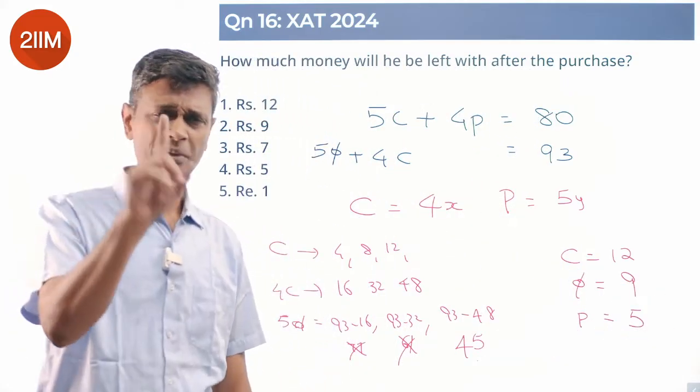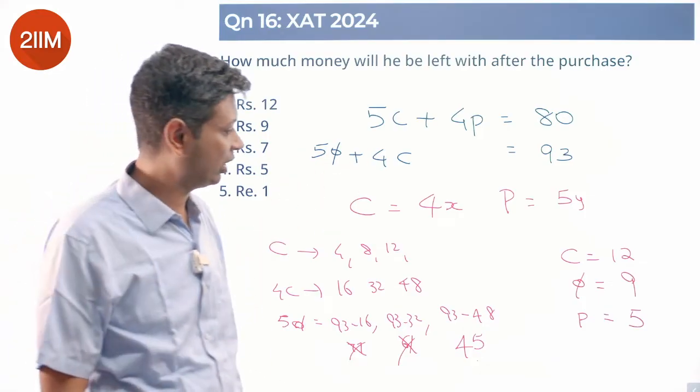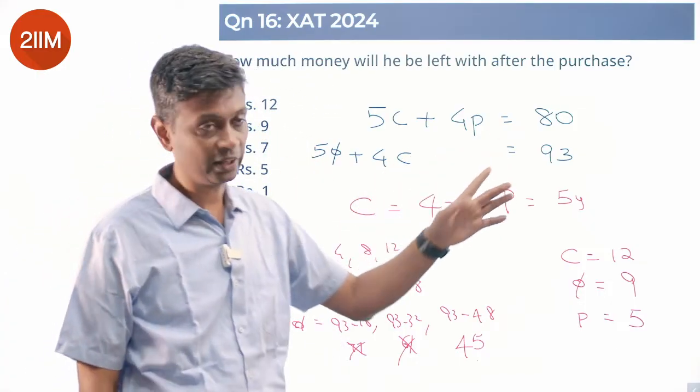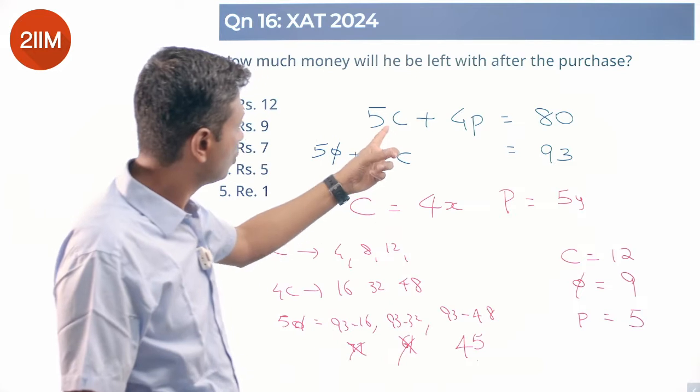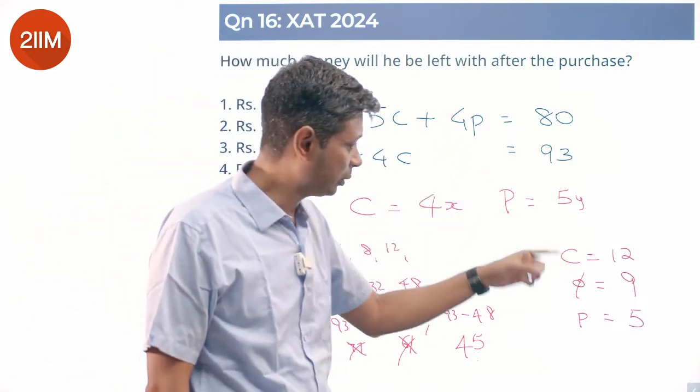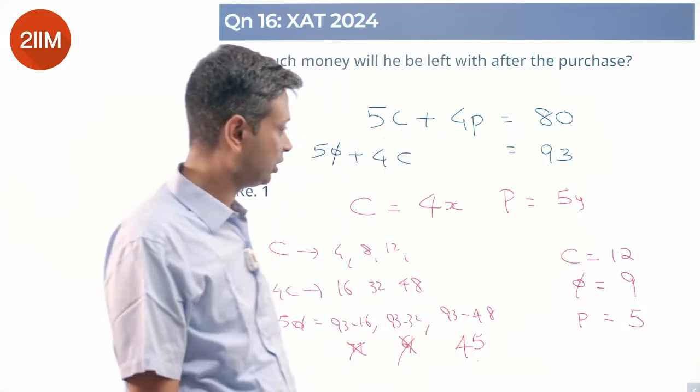So 1 kilogram of cabbage cost 12 bucks. 12 into 4 is 48. 1 kilogram of onion is 9 bucks. 5 into 9 is 45. 45 plus 48 is 93. That works. 5 into 12 is 60. 1 kilogram of potato cost 5. 4 into 5 is 20. 60 plus 20 is 80. This is not just a solution. This is the solution. Only one thing works.